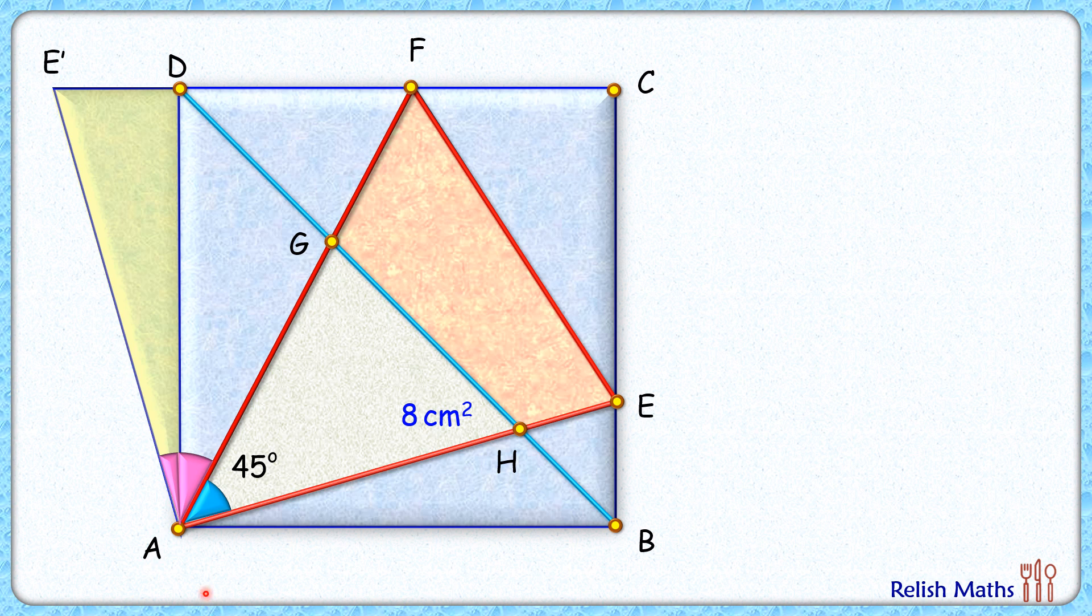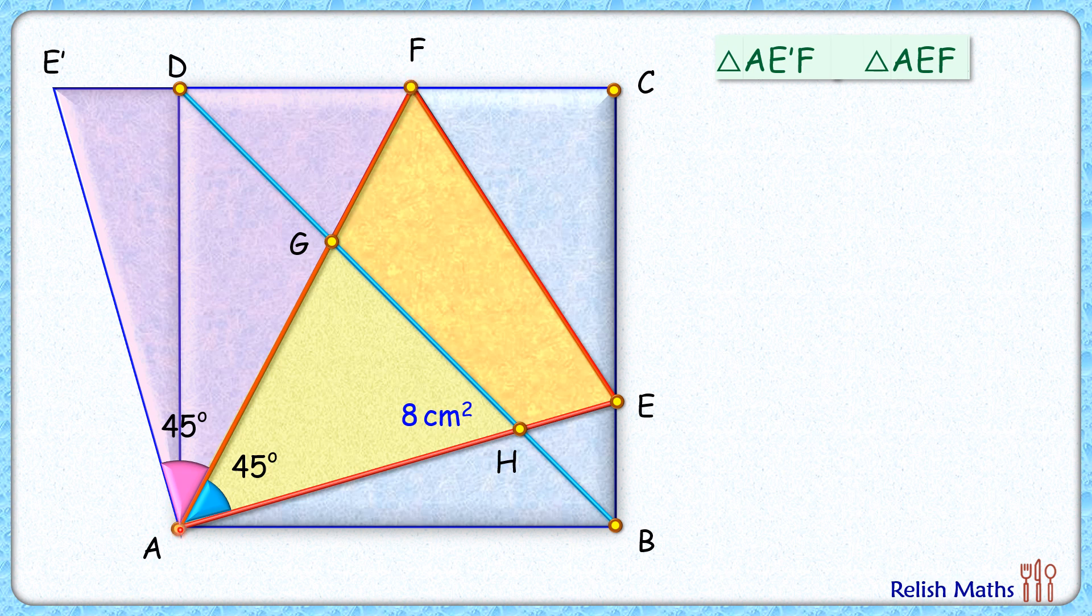Let's check the solution here. These two angles together form 45 degrees. Now if we check triangle AE'F and triangle AEF, in these two triangles the length AE' will be equal to AE because this triangle ADE' is made from this triangle ABE only, and the length AF is common between them.